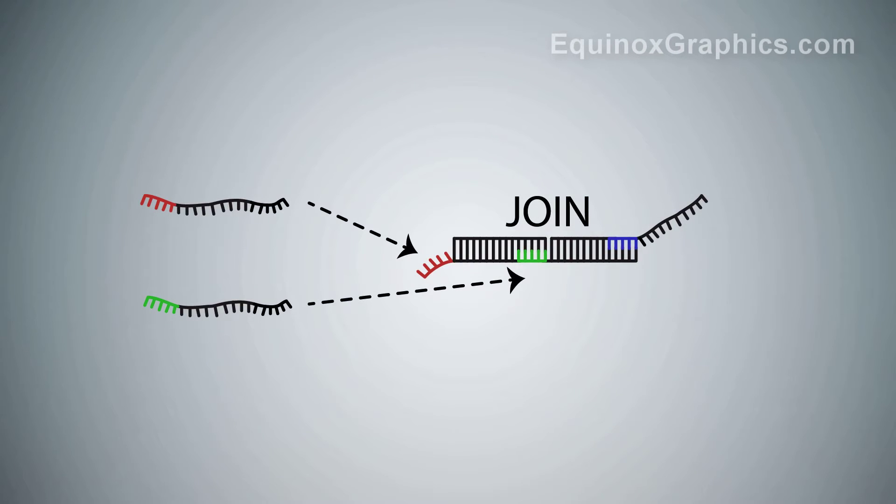For example, we can implement the reaction A plus B goes to C, the biological equivalent of a join gate.